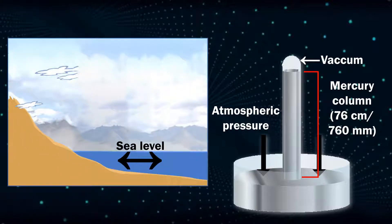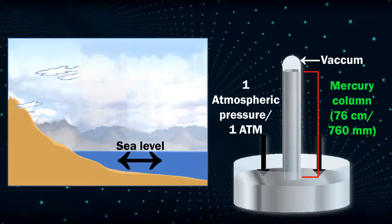At sea level, the height of the mercury column is around 76 centimeters or 760 millimeters. This pressure is also called 1 atmospheric pressure, or 1 atm.